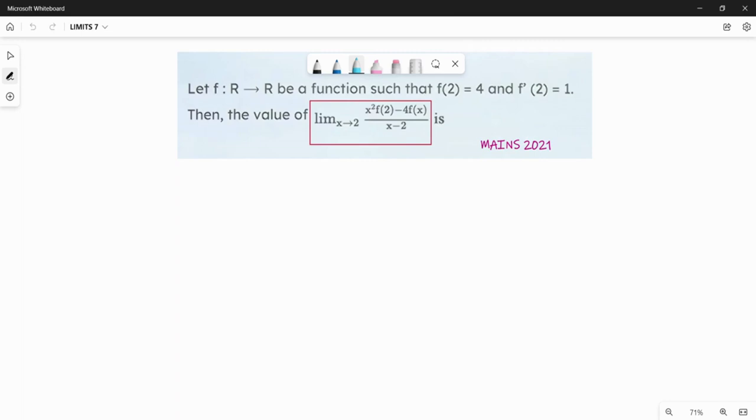f is a function which is defined in R to R. We have a function such that f of 2 equals to 4, and f prime of 2 equals 1.